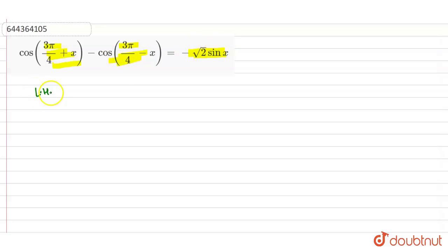So for this, let's write LHS first. So LHS is cos of 3π/4 plus x minus cos of 3π/4 minus x.